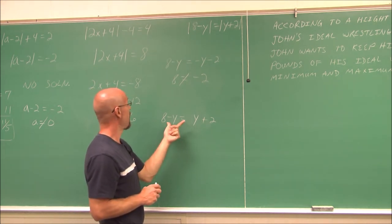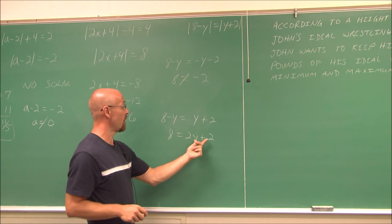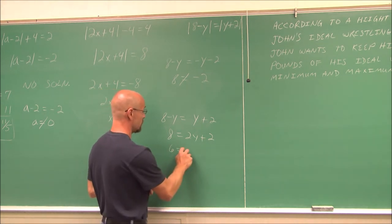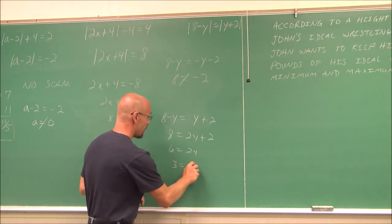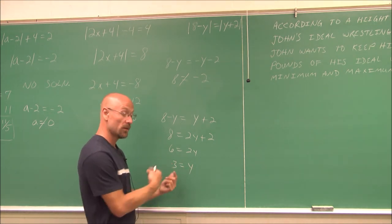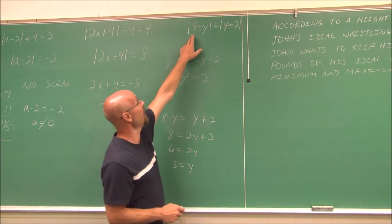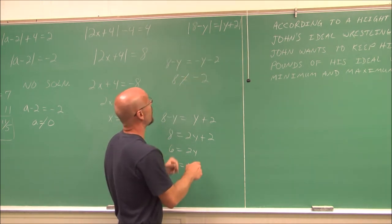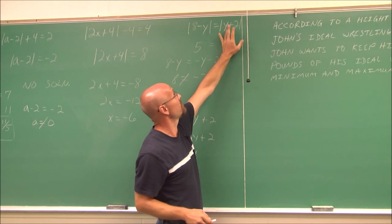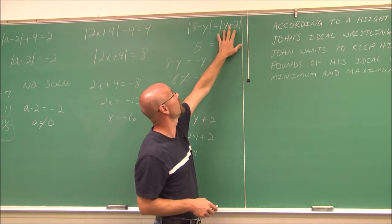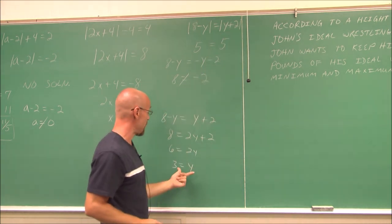For the second equation, adding y to both sides gives 8 equals 2y plus 2. Subtracting 2 from both sides gives 2y equals 6, and dividing by 2 gives y equals 3. Checking: 8 minus 3 is 5, and the absolute value of 5 is 5. On the other side, 3 plus 2 is 5, and the absolute value of 5 is 5. Five equals 5 — true. So here we have only one solution.